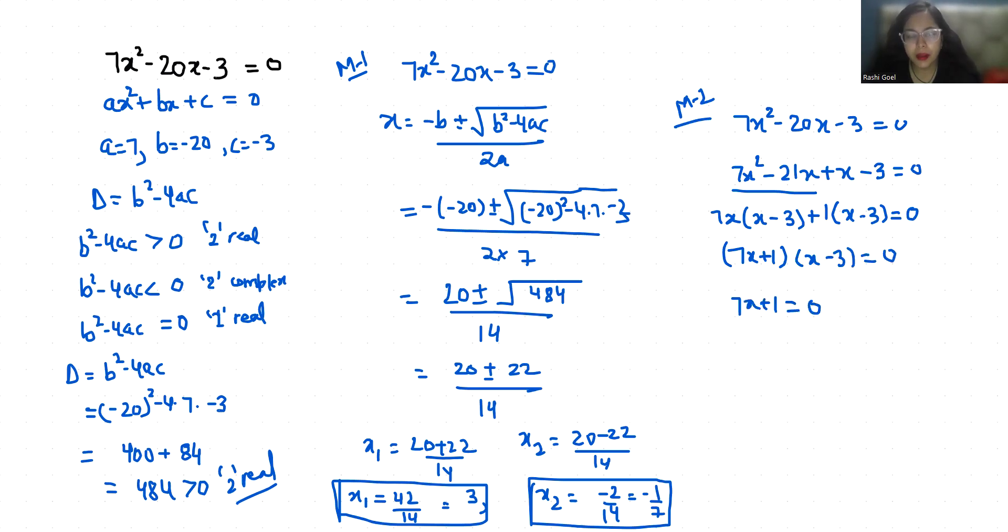x equals 3, and x equals minus 1 by 7. These are the two values of x. I hope it's clear and you find it useful, so please give us a thumbs up and subscribe to my channel for more upcoming videos. Thank you so much.